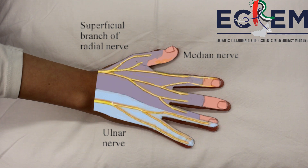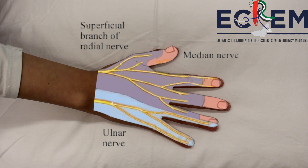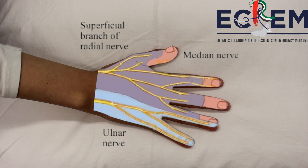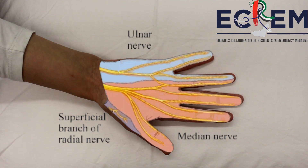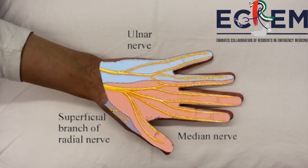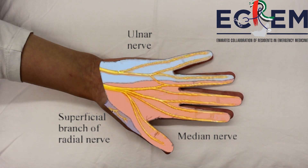The radial nerve innervates the lateral aspect of the dorsum of the hand and the dorsal surface of the lateral three and a half digits. The median nerve innervates the skin of the palmar side of the thumb, index finger, middle finger, and lateral half of the ring finger, including the nail beds. The ulnar nerve is responsible for the sensation of the fifth finger and the medial half of the ring finger.